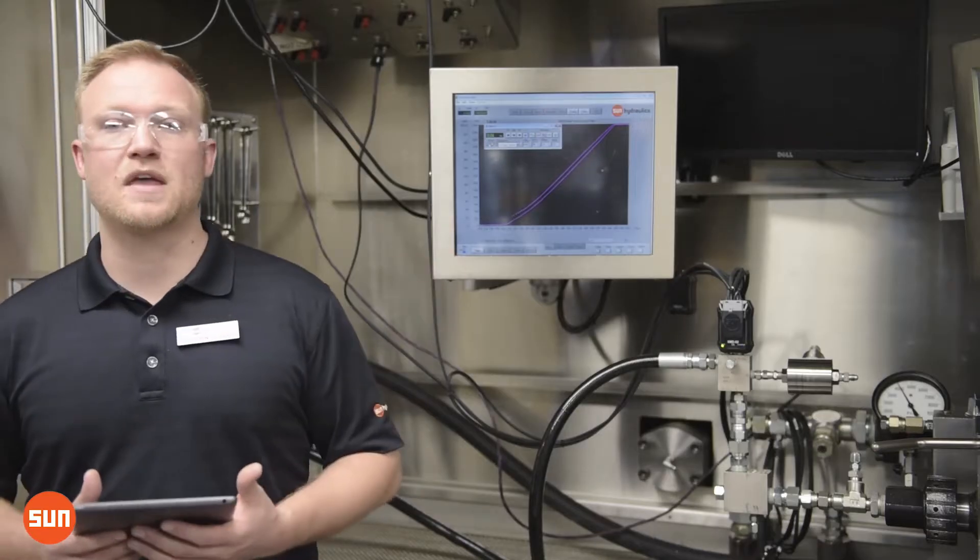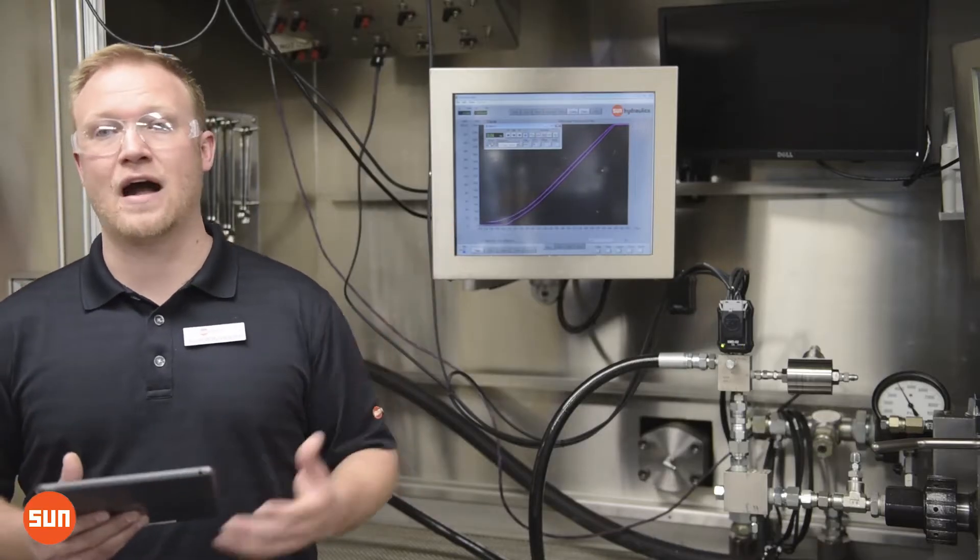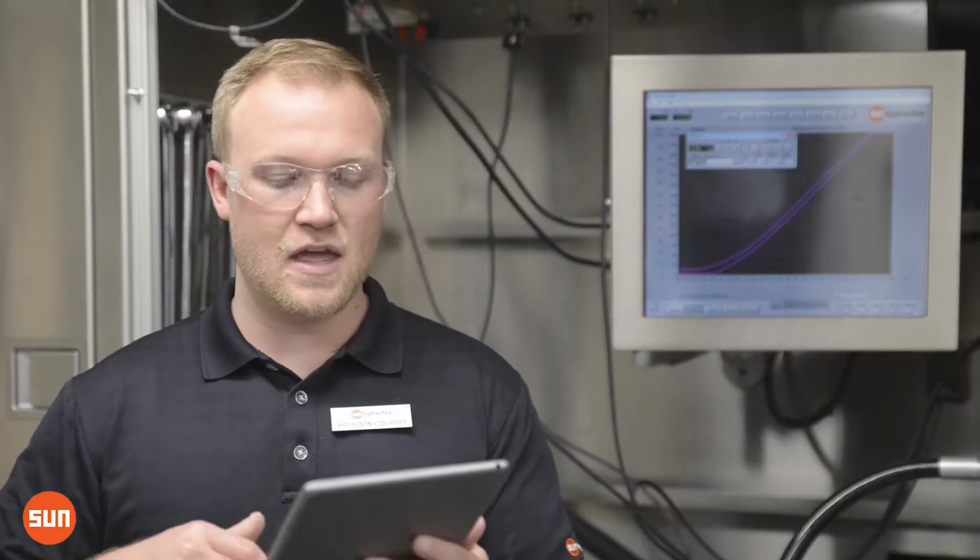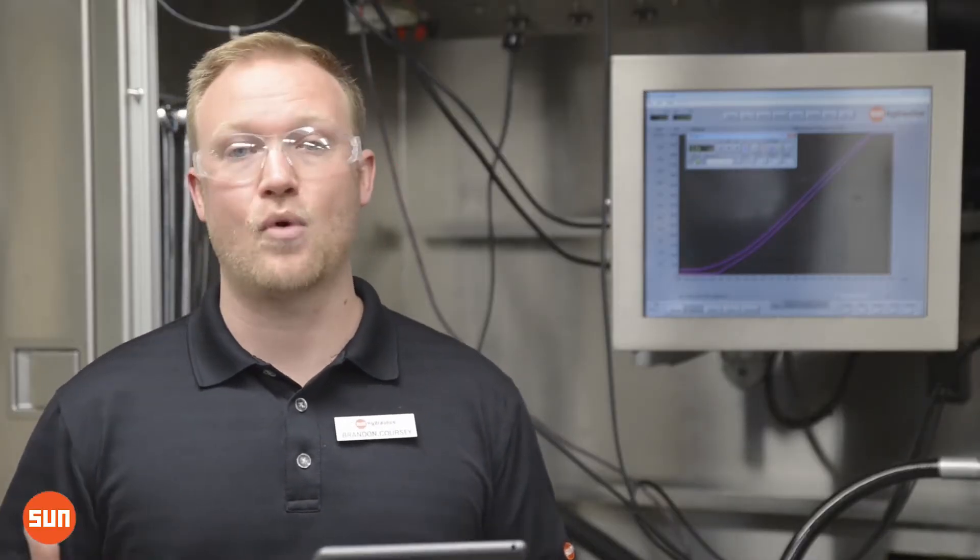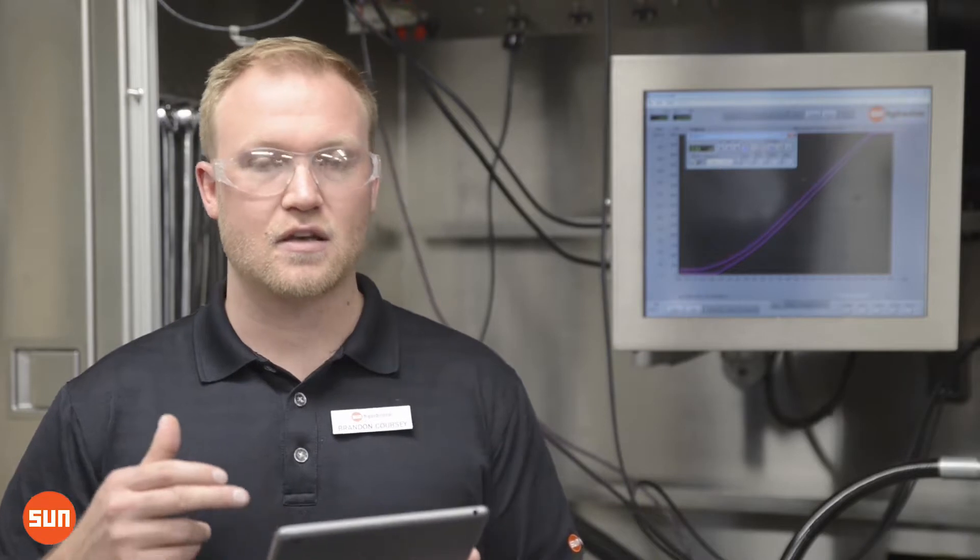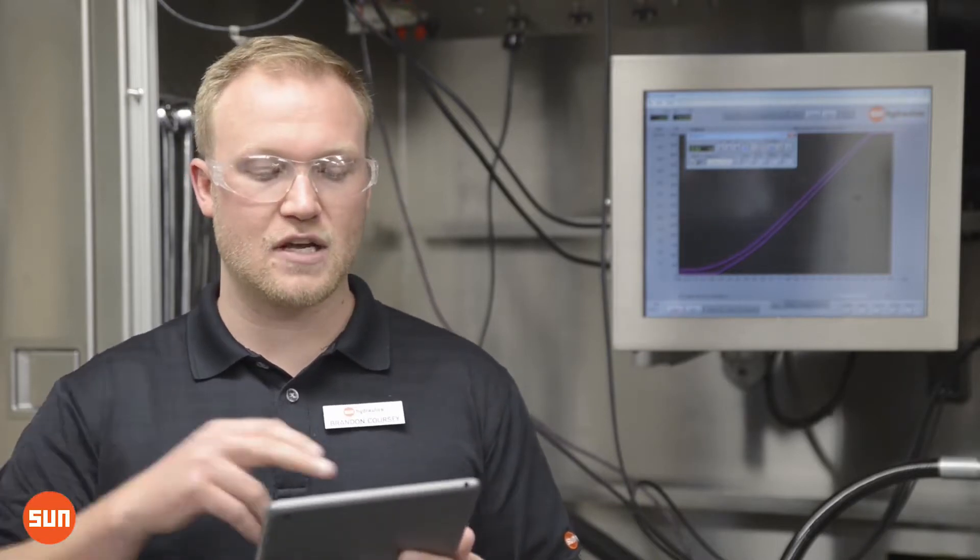You can see that using our RBAP valve, it's a very linear output. But I'm going to show how we can add points and adjust the curve by adjusting the input-to-output relationships.